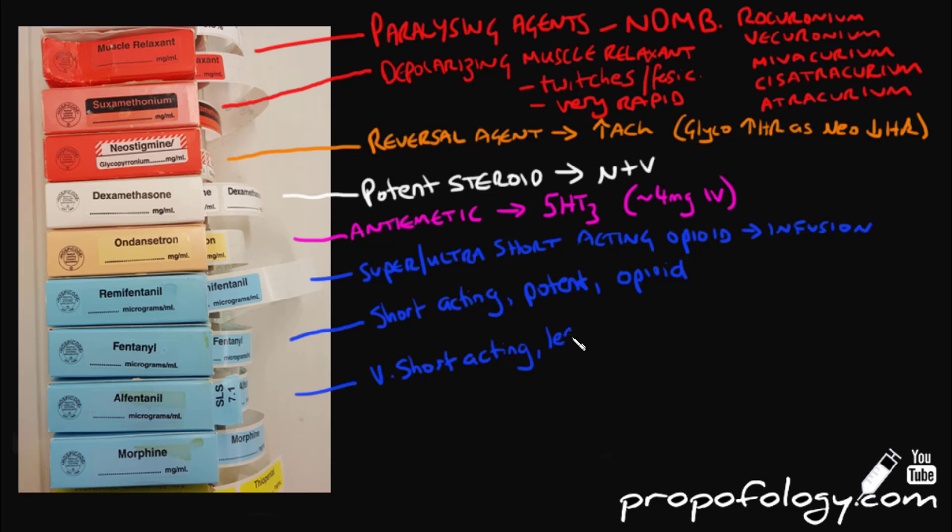Alfentanil is a very short-acting opioid and is less potent than fentanyl. We use it almost in the same way as fentanyl, just the doses are a bit different and it will wear off in a shorter space of time, so it's used in shorter cases or whenever you're looking to provide cover analgesia for short periods during intense surgical stimulation. It'll normally wear off within about 10 or 15 minutes in comparison to fentanyl that normally lingers for about half an hour to 45 minutes.